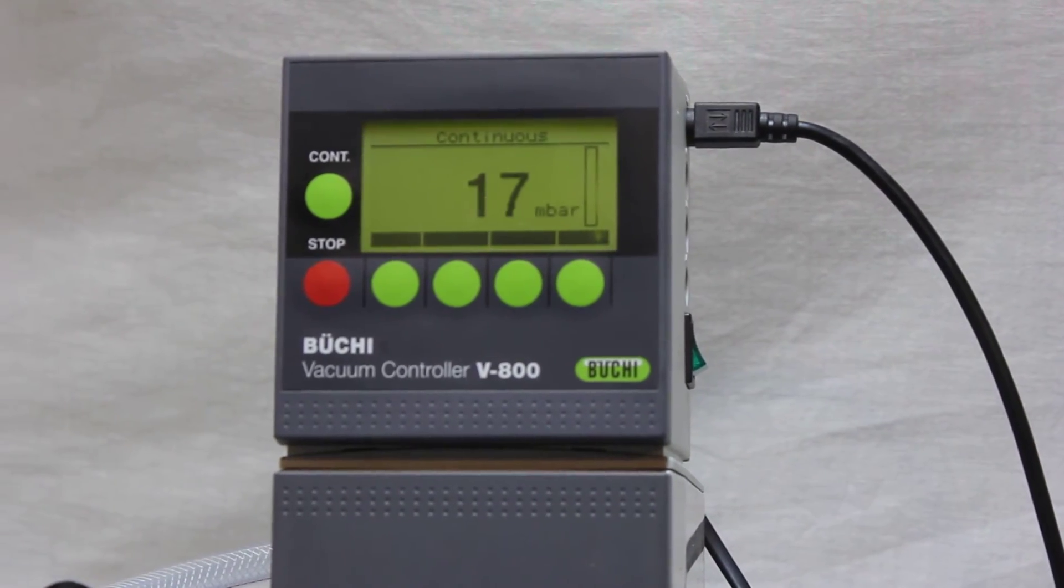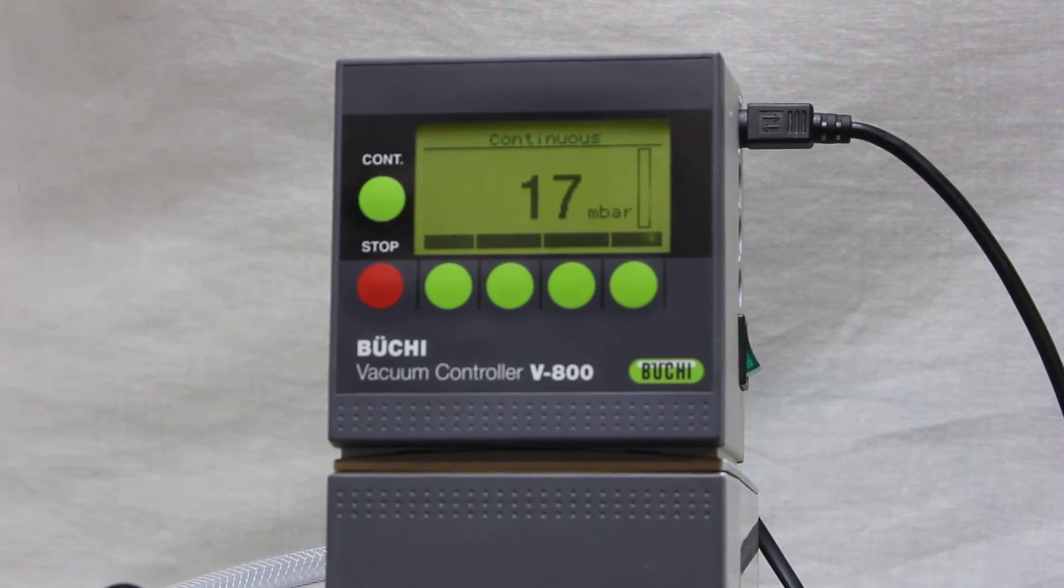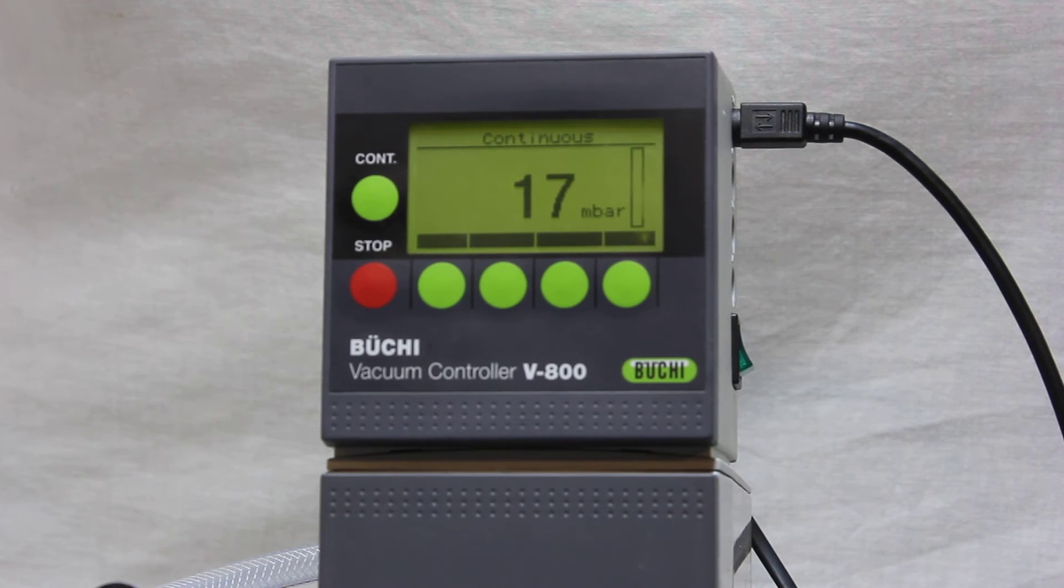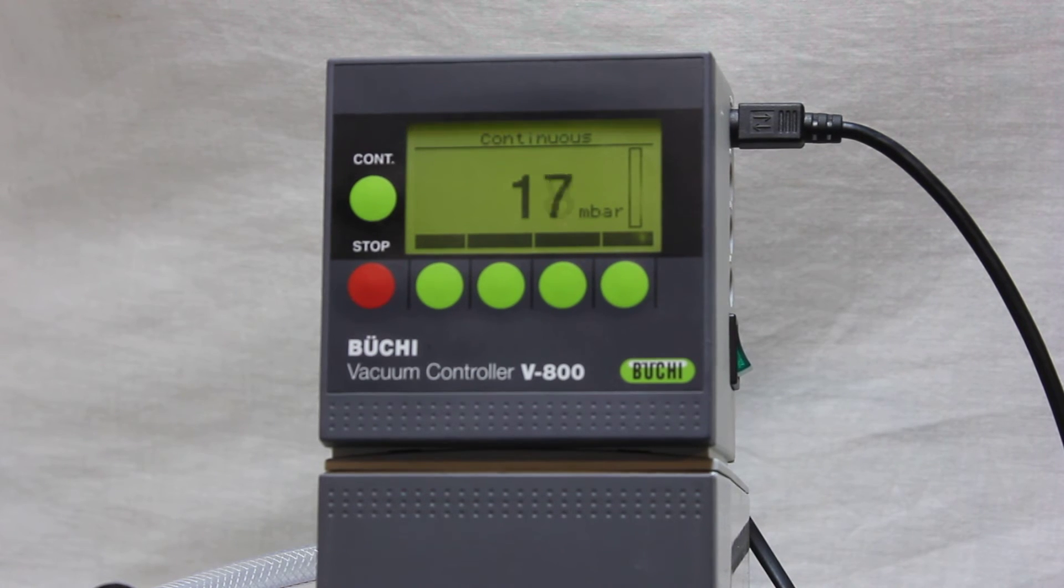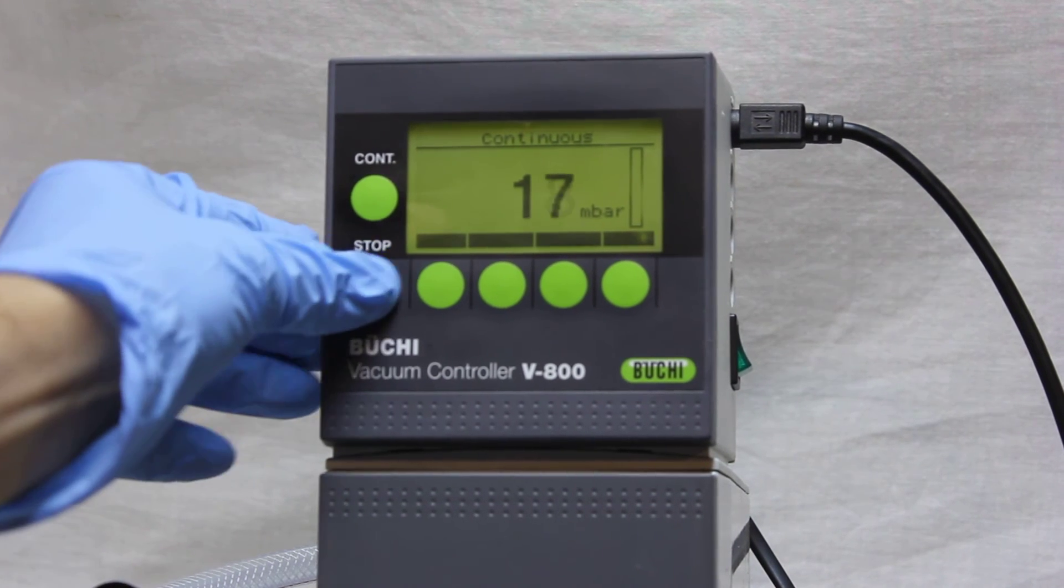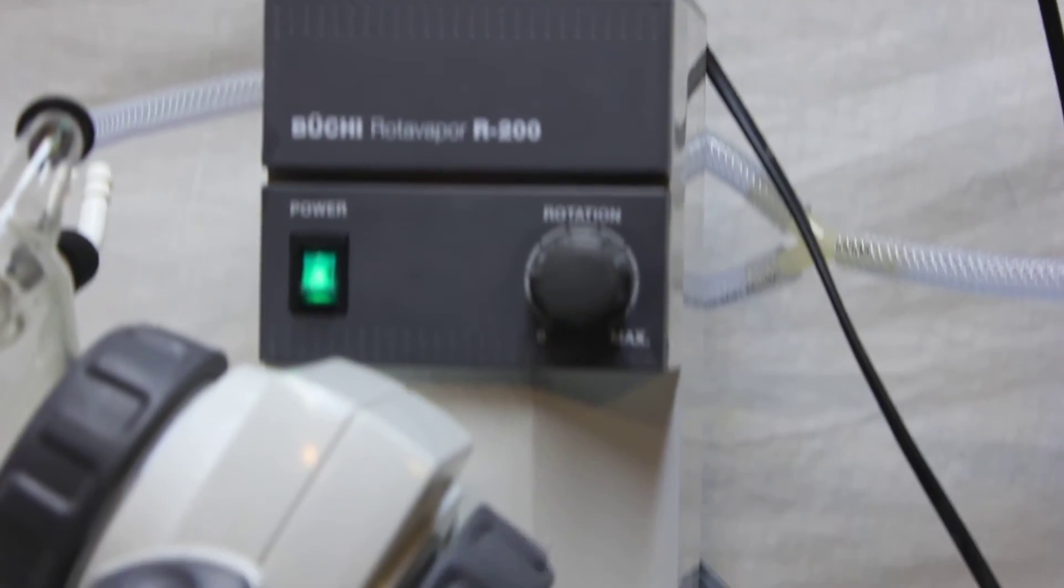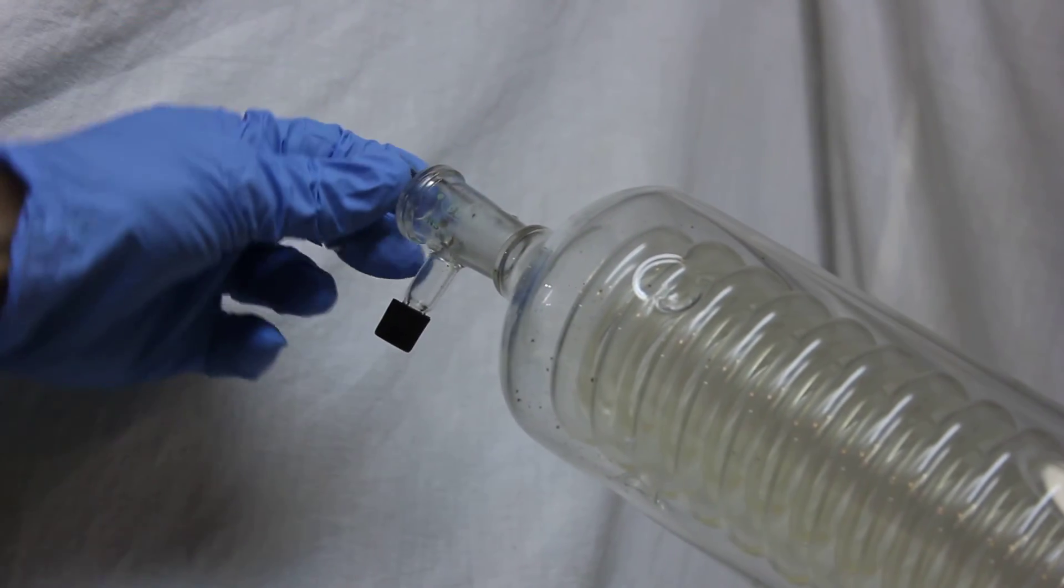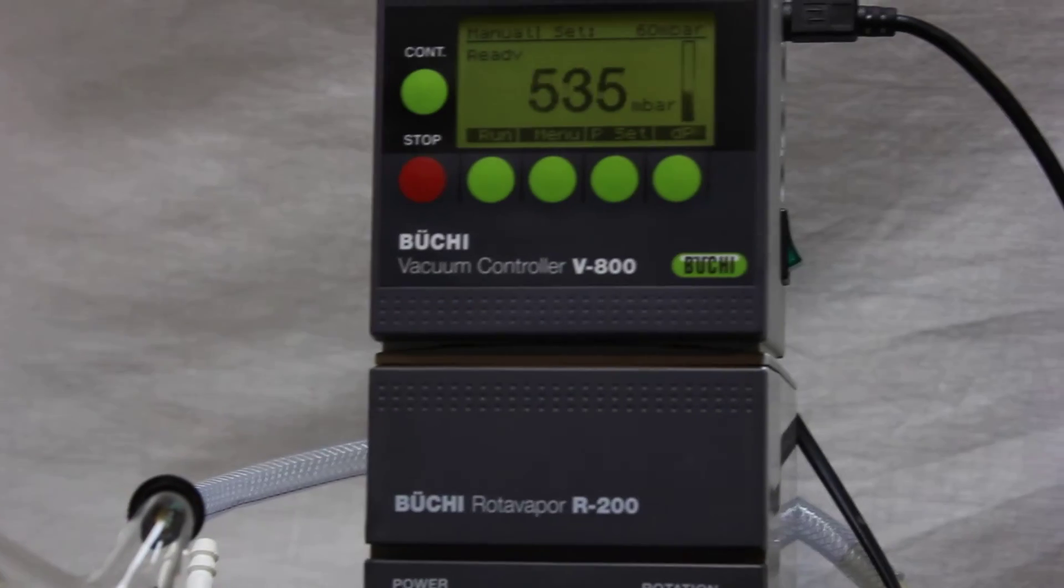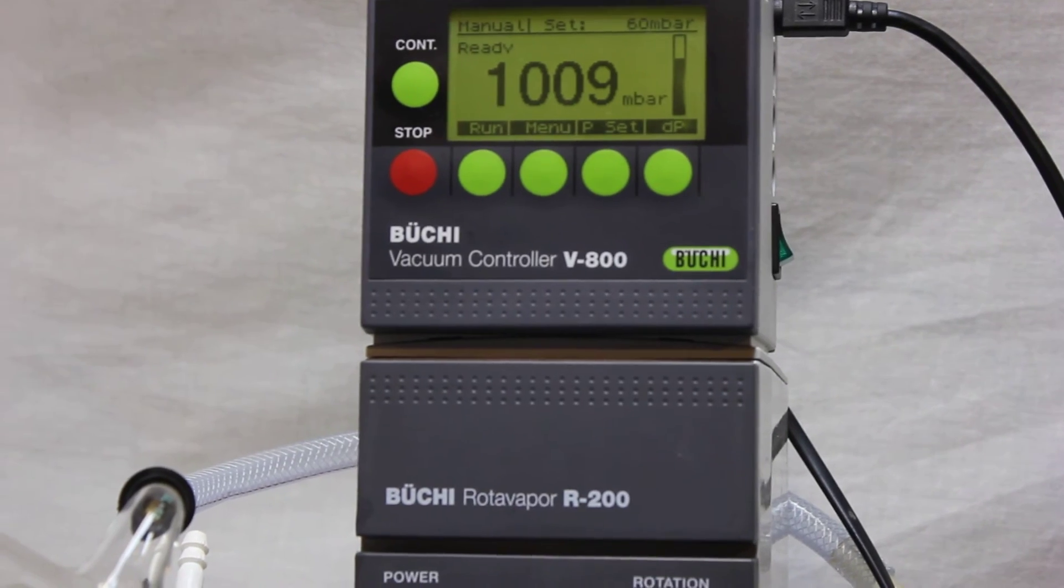Basically 17, 18 millibar. Another test you can do: I can turn off the vacuum controller. You see it still remains on 18 millibar. But as soon as I open this valve, you see it goes back to atmospheric pressure.